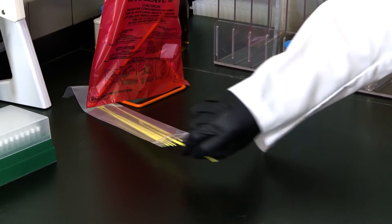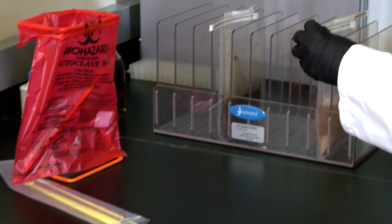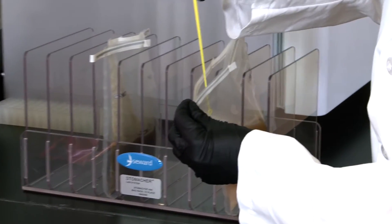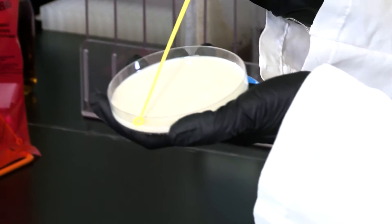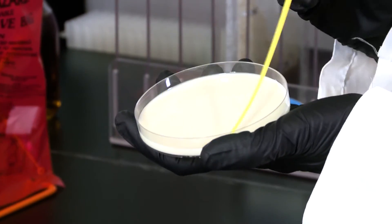First we take 10 microliters of the sample using the calibrated inoculation loop. Place the loop on the outside edge of the plate and streak the sample across half of the agar surface.